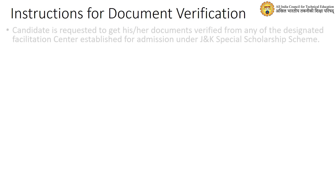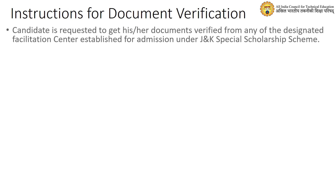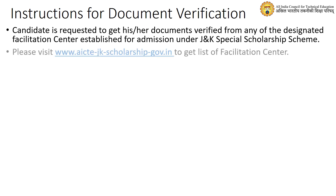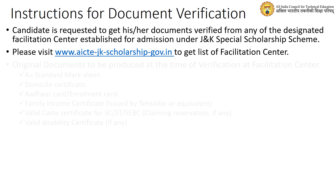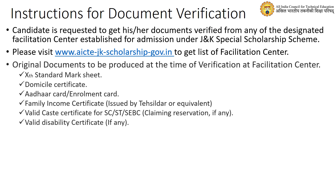The candidate is requested to get his or her documents verified from any of the designated Facilitation Centres established for admission under J&K Special Scholarship Scheme. Please visit the PMSS web portal to get the list of Facilitation Centres. Original documents to be produced at the time of verification are: 10th Class Marksheet, Domicile Certificate, Aadhaar Card or Enrolment Card, Family Income Certificate, Valid CAST Certificate for SC/ST/SEBC, and Valid Disability Certificate if any.